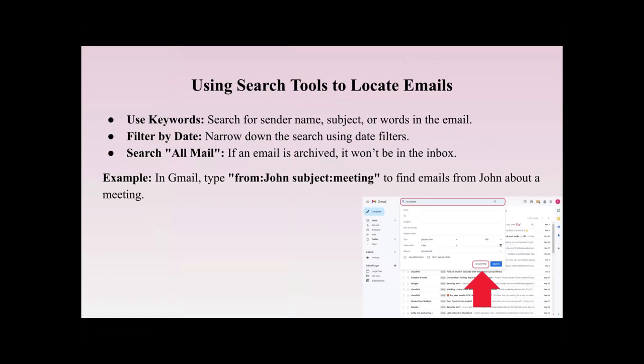Using search tools to locate emails: you can use keywords, filter by date, or search all mail. Keywords can include certain words used in the email, the sender's name, or the subject. Filtering by date lets you narrow down the search — for example, if you know an email was sent between February and April you can select those months. Using both keywords and a date filter together increases the probability of finding your email more easily.